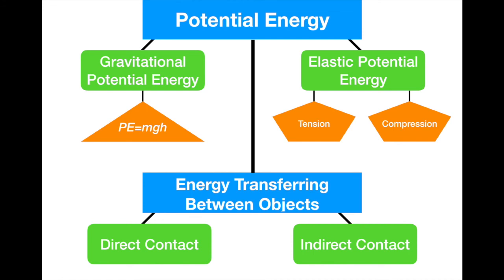Potential energy is energy that's stored. It can be stored by an object being above a surface — that's gravitational potential energy — or it can be stored in the shape of the object, whether by compression where it's squeezed together, or tension where it's pulled apart. Potential energy is useful because it can change into kinetic energy through direct contact when two objects touch, or through indirect contact when you deal with force fields like gravity or electromagnetic forces. That's the lesson — I hope you enjoyed it and learned something. If you have any questions, please let me know, and thanks for watching.